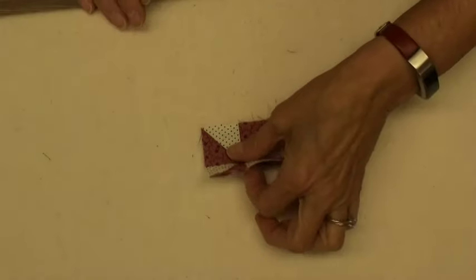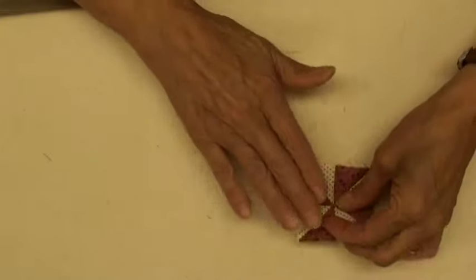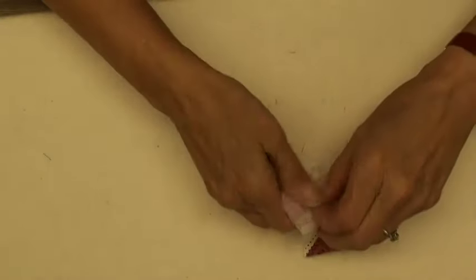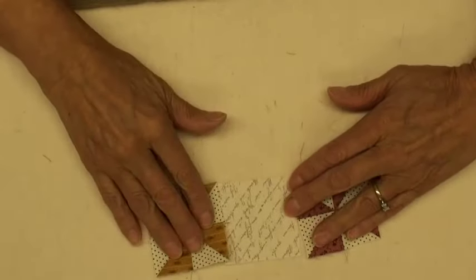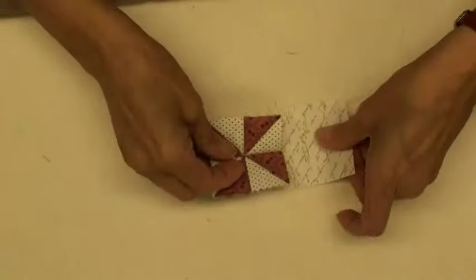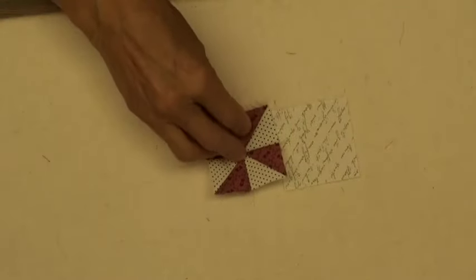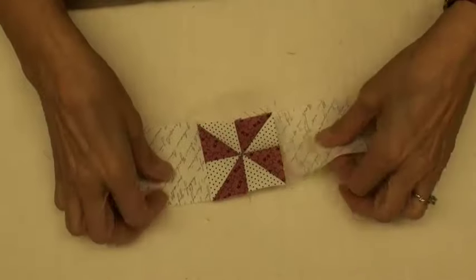When you have all of your pinwheels sewn, you are going to be sewing a pinwheel to a square to another pinwheel for rows one and three. For row two, you're going to have a square, a pinwheel, and another square. So when you have all of those three rows sewn together, sew that together into your one six and a half inch unit.